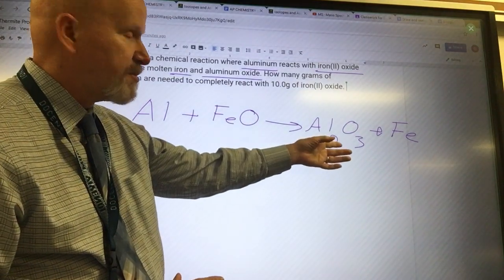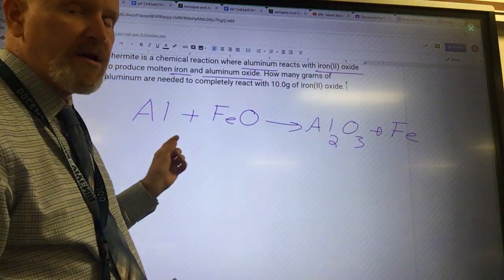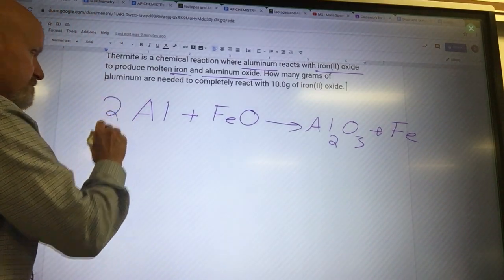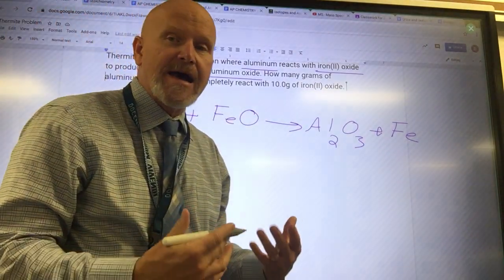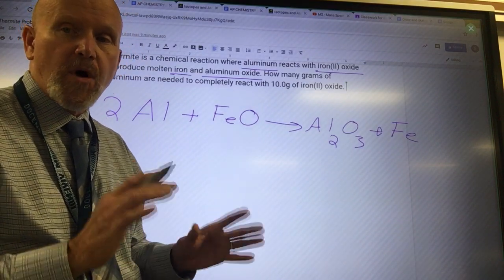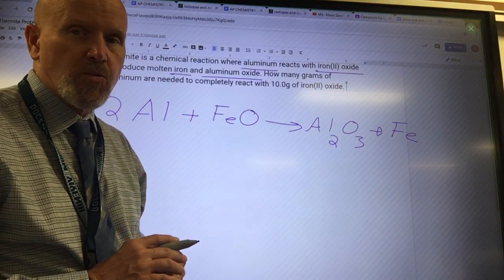We see there's two aluminums in the aluminum oxide but I only had one aluminum atom to start with, so how do I fix that? Coefficient two. Remember, not subscript two, coefficient two. Remember, once we get our subscripts set, we can't touch them.